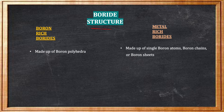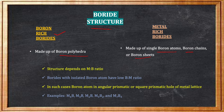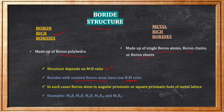Regarding boride structure, boron-rich borides are made up of boron polyhedra, while metal-rich borides are usually made up of single boron atoms, boron chains, or boron sheets. The structure depends on the metal-to-boride ratio. Borides with isolated boron atoms have a low boron-to-metal ratio; in such cases, the boron atom sits in a trigonal prismatic or square prismatic hole of the metal lattice.